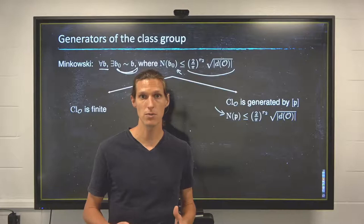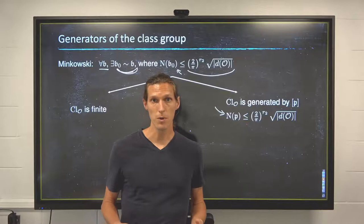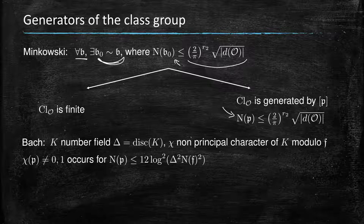So instead of relying on this unconditional bound on the norm of the generators of the class group, we need to do something more. In particular, there are better results that assume the generalized Riemann hypothesis. So it's a result due to Bach that says...